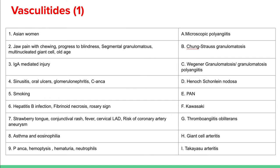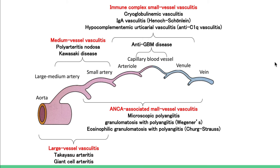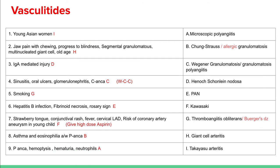Moving on to pathology — vasculitides. Make sure you know the general classification: large vessel vasculitides are Takayasu's and giant cell arteritis; medium vessel vasculitides include polyarteritis nodosa (PAN), Kawasaki disease, and Buerger's disease; small vessel vasculitides include ANCA-associated types like microscopic polyangiitis, Wegener's granulomatosis, and Churg-Strauss, and non-ANCA-associated types like IgA vasculitis (Henoch-Schönlein purpura).